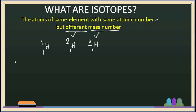Let's look at the number of electrons. For H-1,1: number of electrons is 1. For H-1,2: number of electrons is 1. For H-1,3: number of electrons is 1. Same with the number of protons — the number of protons is 1 for all three. The atomic number is 1, so the number of protons is also 1.